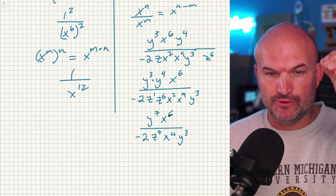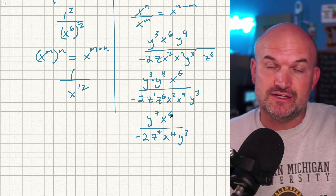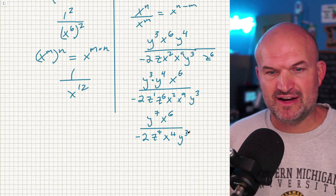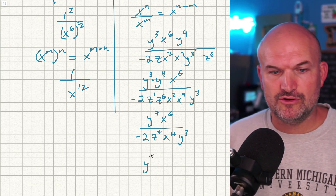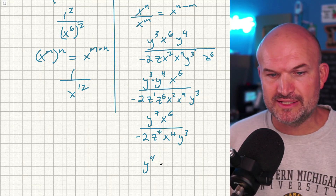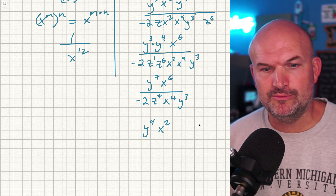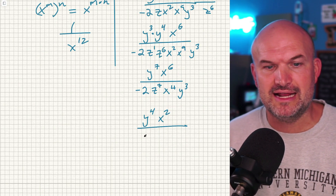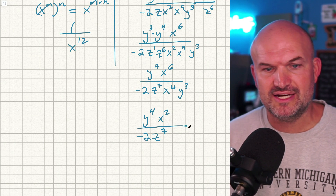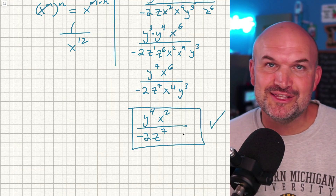Now I can use the quotient rule. If the result is positive, it remains in the numerator; if negative, it goes to the denominator. Y to the seventh divided by y cubed is y to the fourth — that stays in the numerator. X to the sixth minus eleven is negative five — wait, six minus four is two — so that also remains. There are no other z's in the numerator, so z to the seventh stays in the denominator. So the final answer is y to the fourth x squared over negative two z to the seventh. That is how you simplify that expression using the rules of exponents.